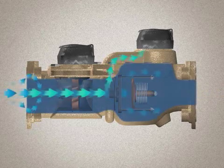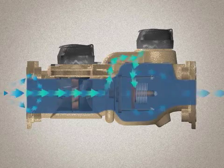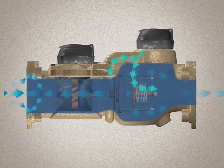It's important to note that in a high flow condition, a portion of the water still flows through the disc chamber before exiting the meter.